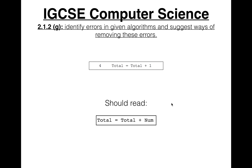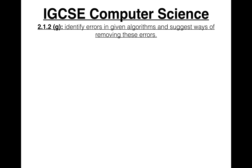They give you line numbers for each line of code, so when identifying errors you don't need to quote the full line — you can just say 'line 4 should read total = total + num.' Line 5 has `counter = counter + 1` — why is this an error?